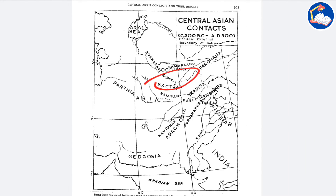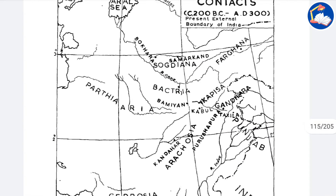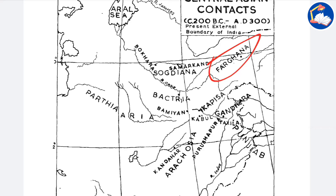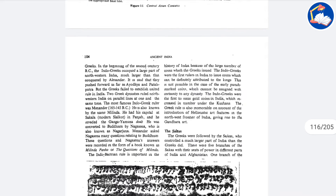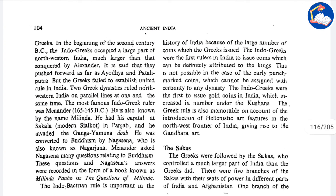This is the area of Central Asian contacts — we can find Bactria and Parthia here, along with the Indian territory, the Punjab region, and Farghana — all these are Central Asian contact zones. In the beginning of the second century BC, the Indo-Greeks occupied a large part of northwestern India, much larger than that conquered by Alexander.